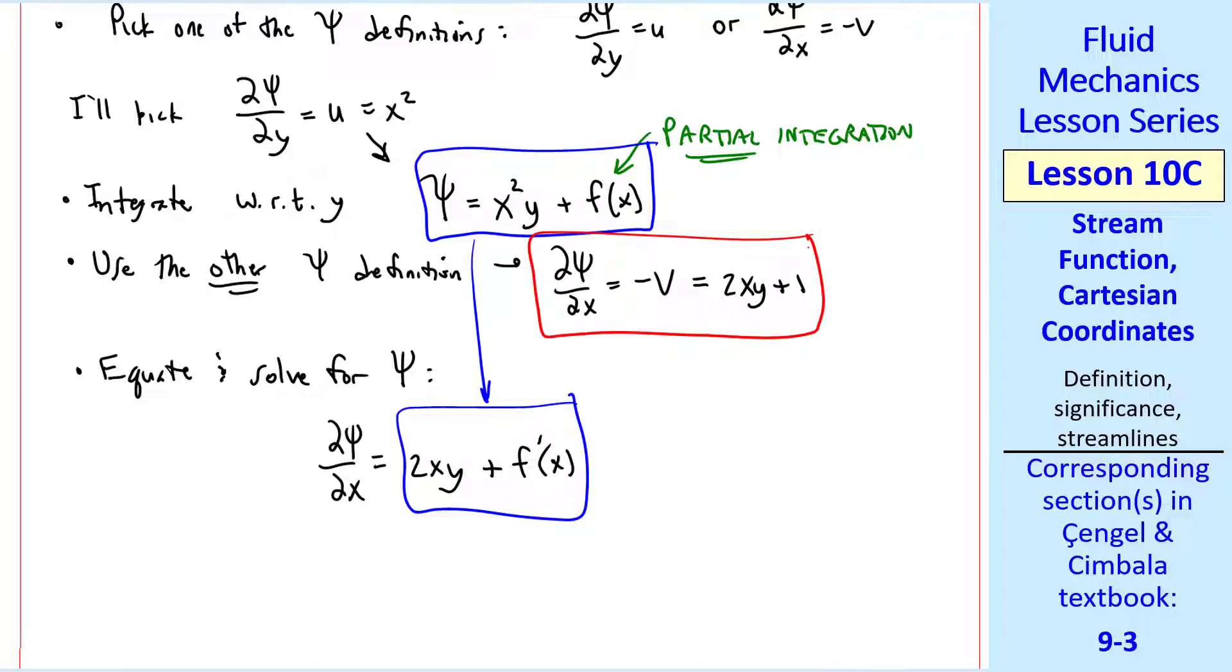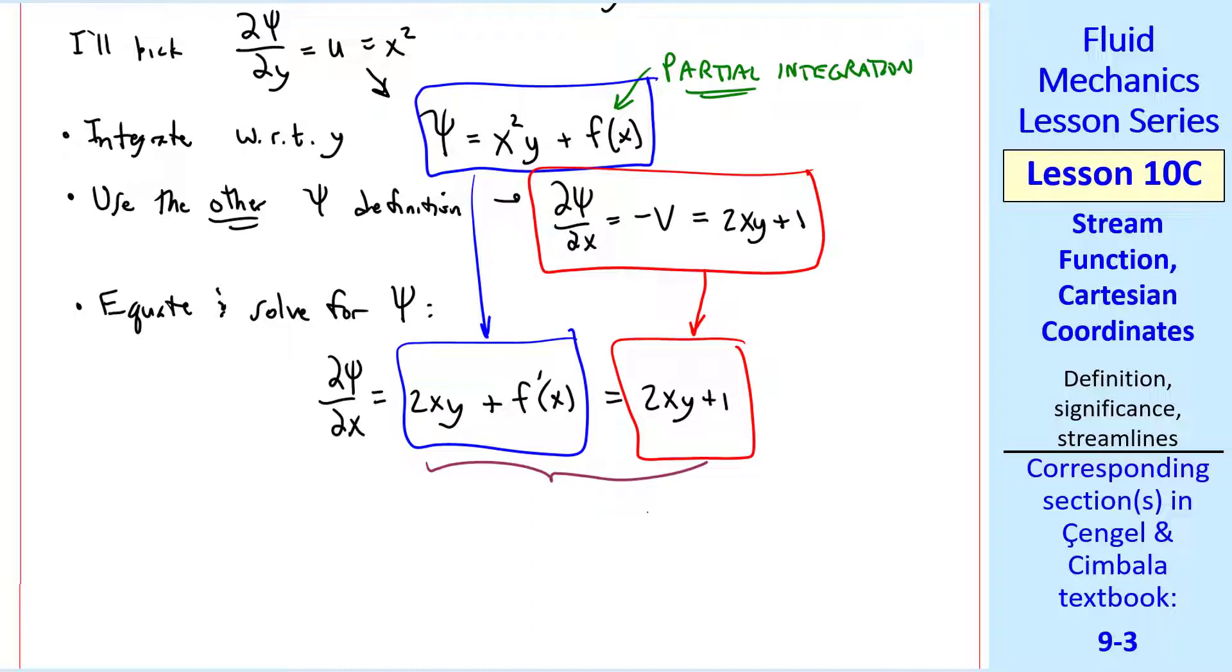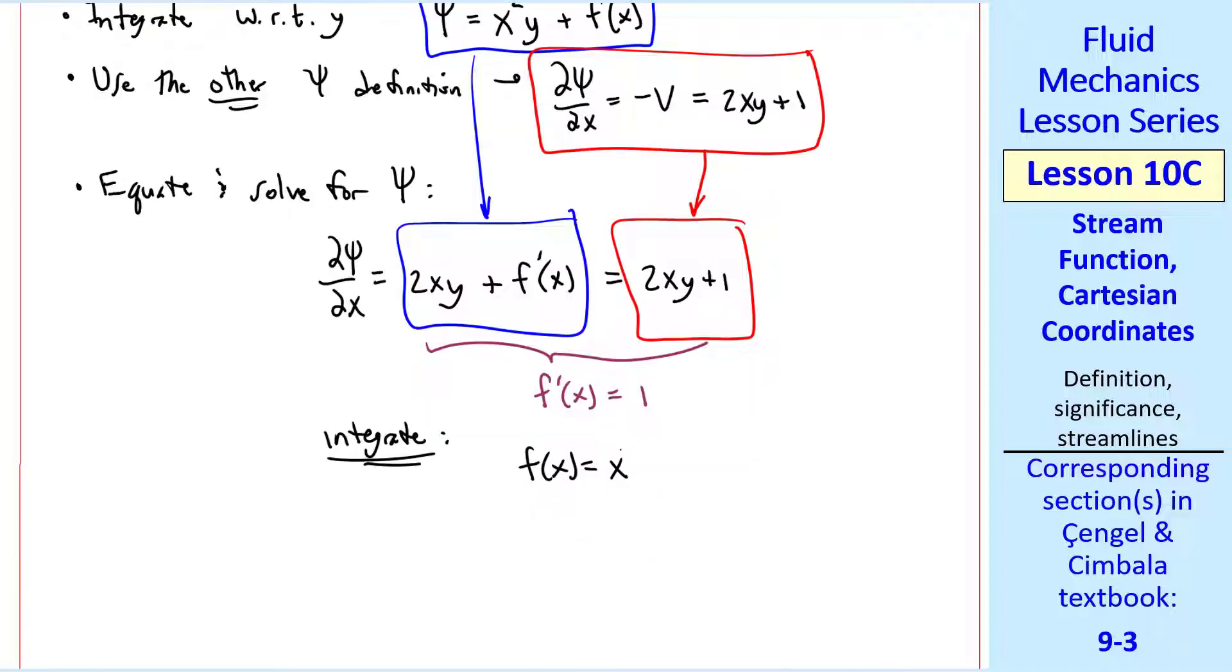But we also know that del psi del x is 2xy plus 1 so I put that on the right and indicate by color where that came from. Now we look at this equation and see that f prime of x must equal 1 since there's a 2xy on each side that cancels. We can easily integrate this equation which gives us f of x equal x plus now we use a constant since this is a total integral not a partial integral.